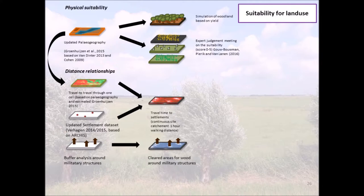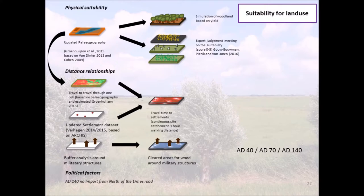We also included buffer analyses simply around military structures. There is an assumption that wood was cleared away within 300 meters around watchtowers and Roman fortresses — castella — and we included that rule in our model. Political factors were also included, especially for AD 140, where it is assumed that north of the River Rhine, north of the Limes, no arable farming surplus or wood was obtained, and that everything was sourced south of the Limes for the Roman presence.